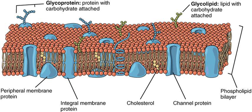In the plasma membrane, flippases transfer specific phospholipids selectively, so that different types become concentrated in each monolayer. Using selective flippases is not the only way to produce asymmetry in lipid bilayers, however. In particular, a different mechanism operates for glycolipids — the lipids that show the most striking and consistent asymmetric distribution in animal cells.